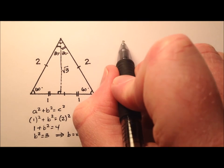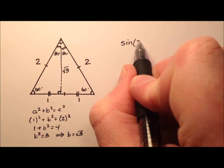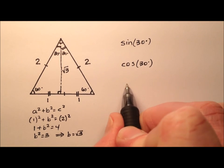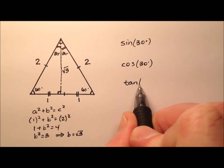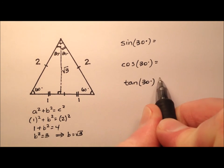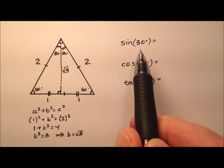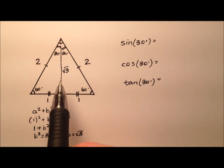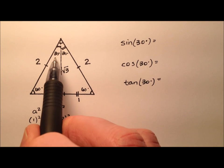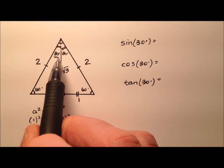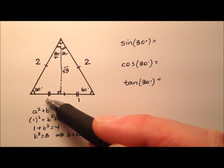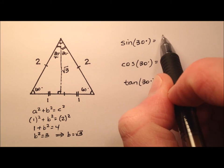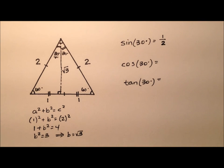Let's do the sine of 30 degrees. The sine ratio is the opposite side divided by the hypotenuse. From the 30 degree angle, the opposite side is one and the hypotenuse is two. So the sine of 30 degrees is one half.